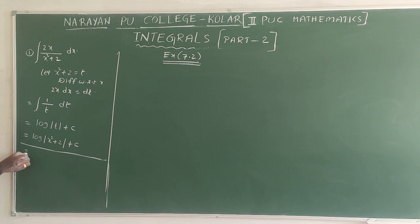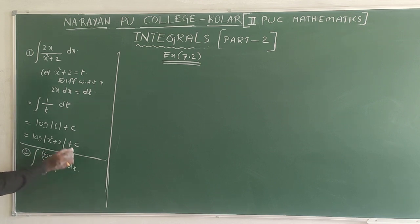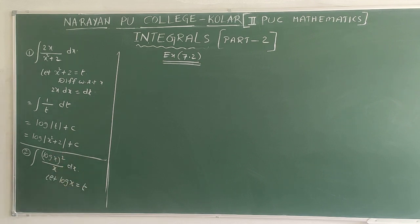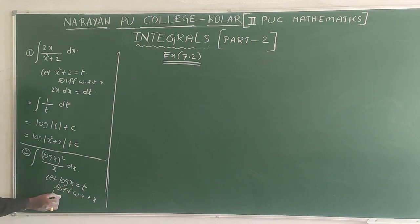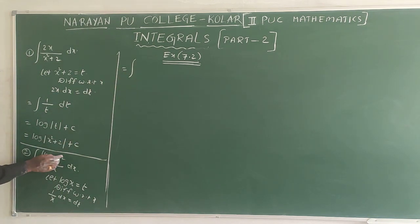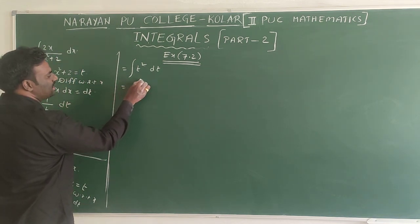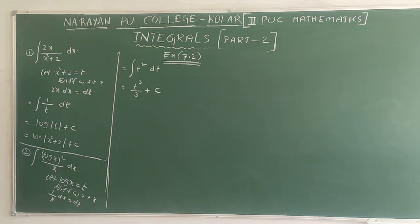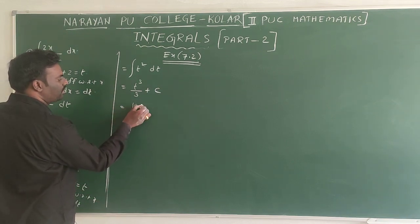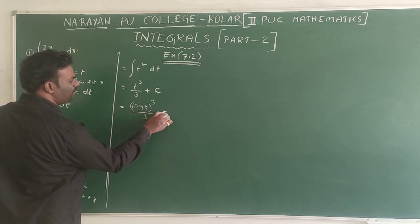Question 2: integral (log x)² / x dx. Let log x = t. Differentiate: (1/x) dx = dt. The integral becomes ∫ t² dt. Using x^n formula: t³/3 + c. Substitute t = log x. Answer: (log x)³/3 + c.